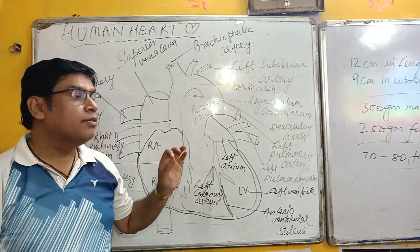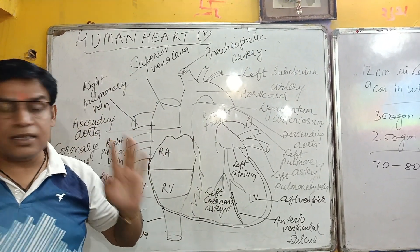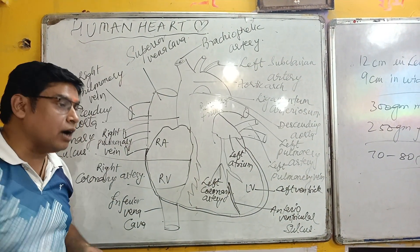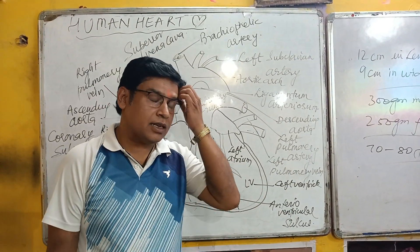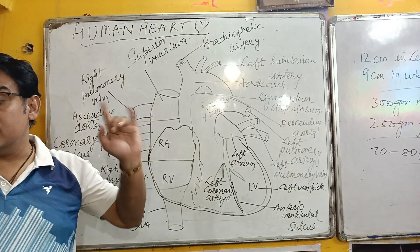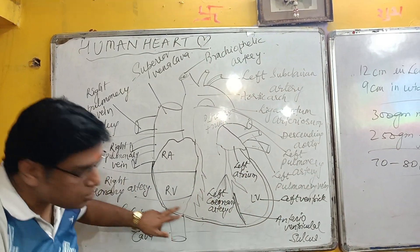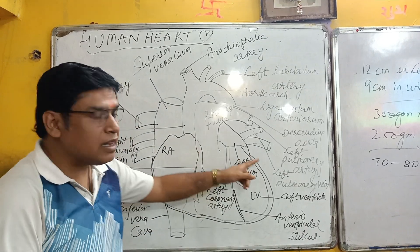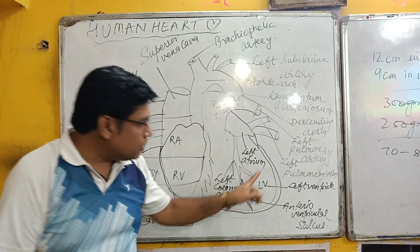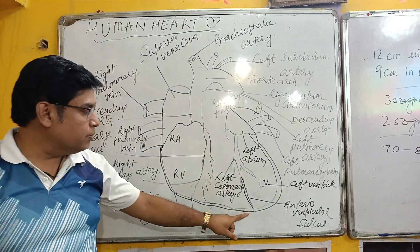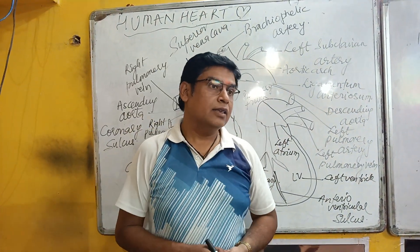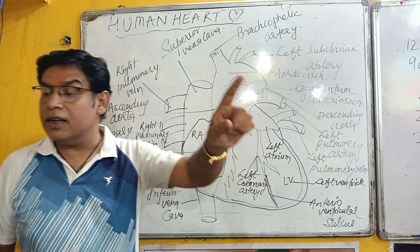We will now study the human heart systematically. The entire outer layer of the heart is known as the pericardium. The heart is enclosed in a double-walled sac called the pericardium. It is made up of a fibrous outer layer and a thin inner layer, with a narrow space between them filled with pericardial fluid.